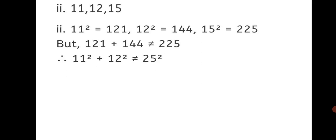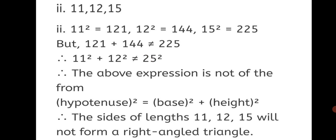Second sum: 11, 12, 15. The squares: 11 square is 121, 12 square is 144, 15 square is 225. But 121 plus 144 is not equal to 225. Therefore, 11 square plus 12 square is not equal to 15 square. The above expression is not of the form hypotenuse square is equal to base square plus height square. Therefore, the sides of lengths 11, 12, and 15 will not form a right-angled triangle.